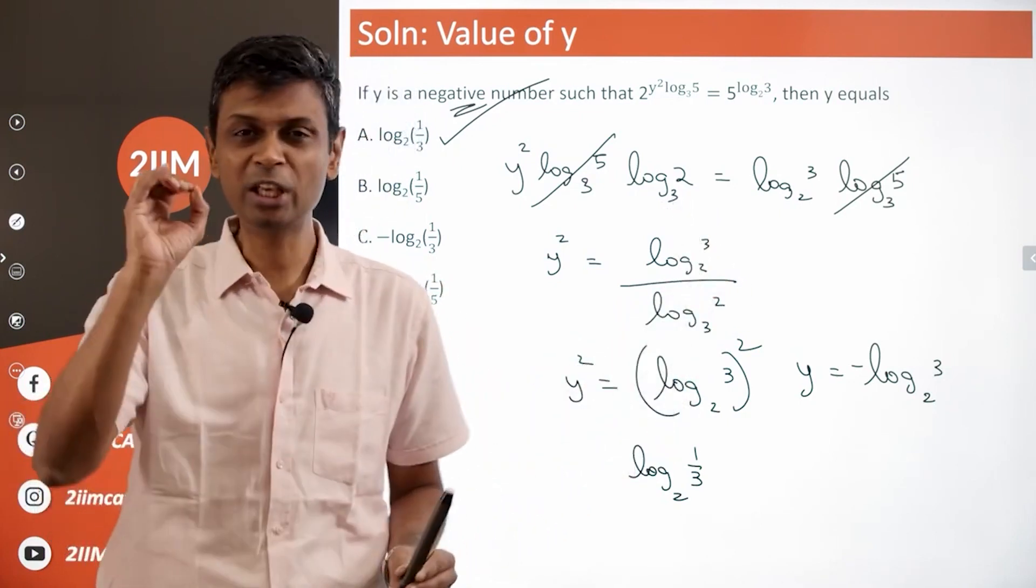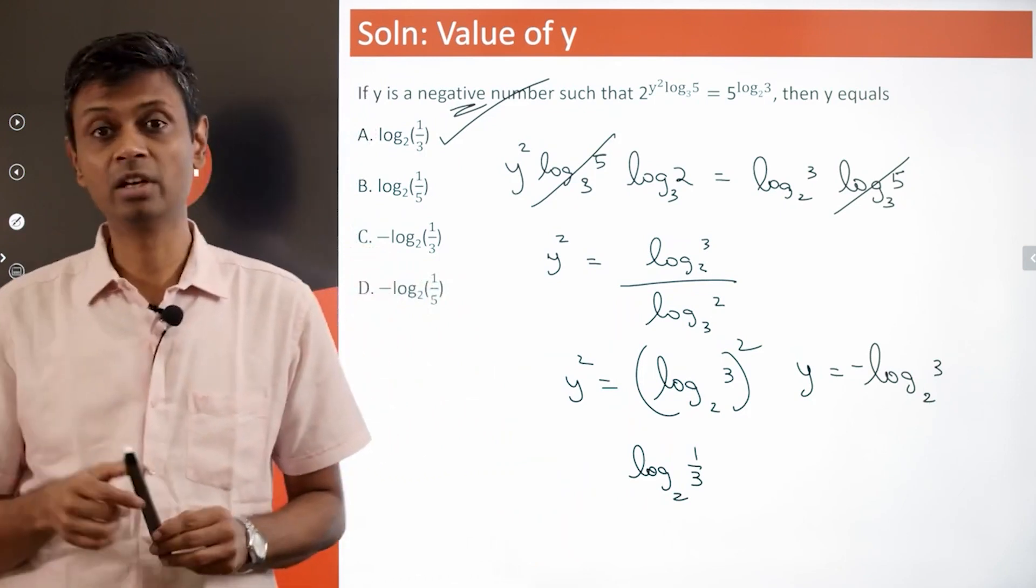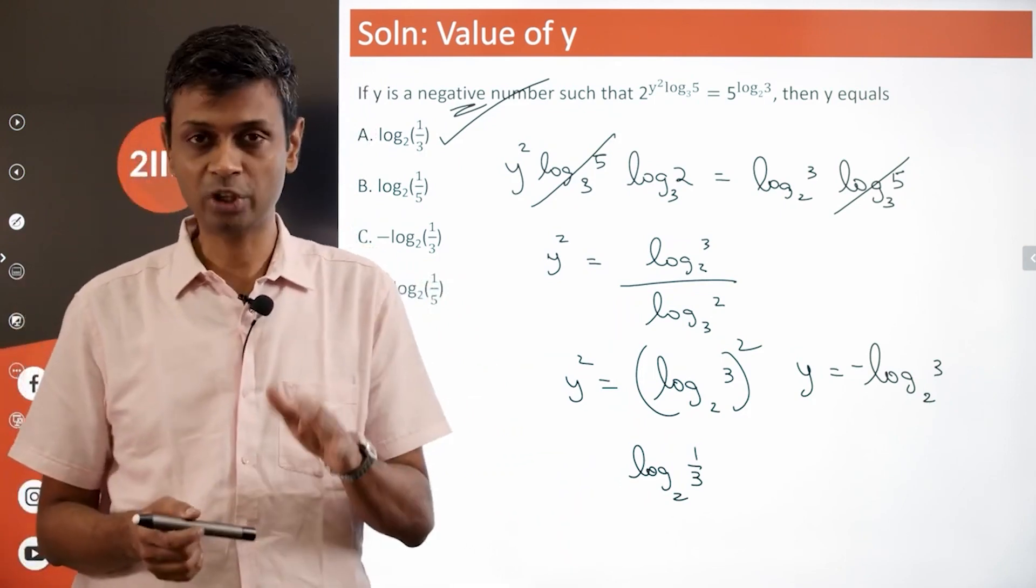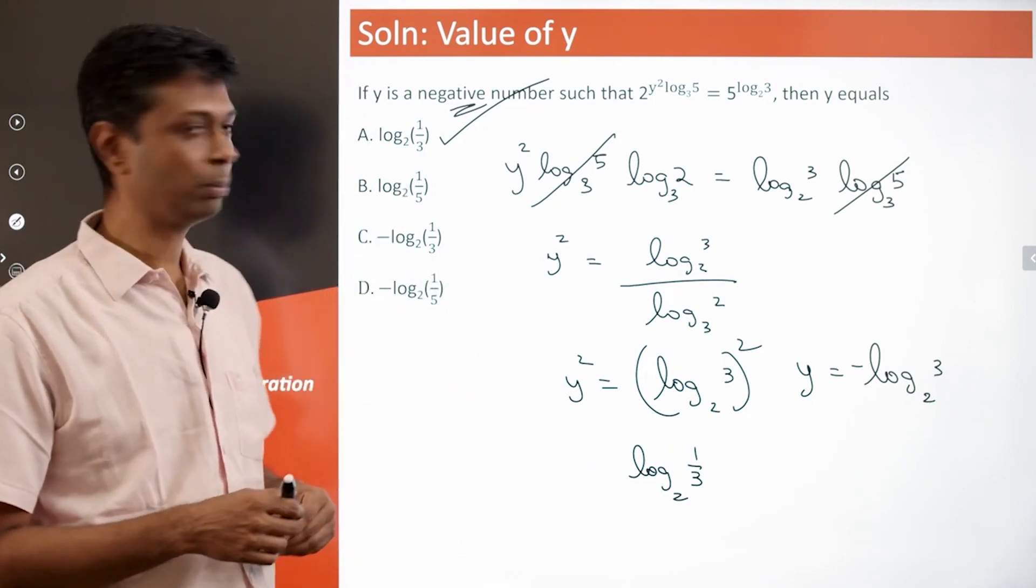Final thing, when you come here, you have to keep in mind that the question clearly states that y is a negative number. That's something to keep in mind. The answer is log 1 by 3 to the base 2.